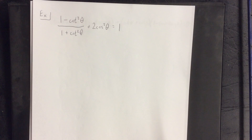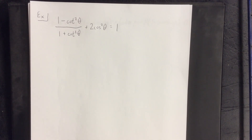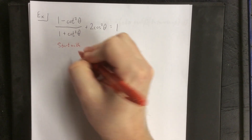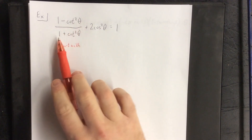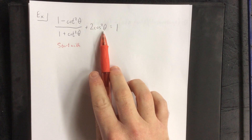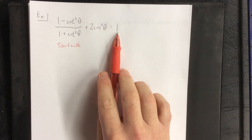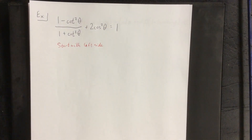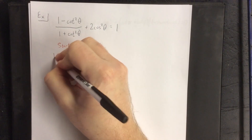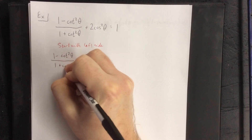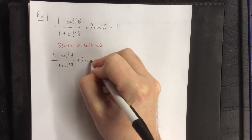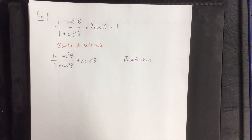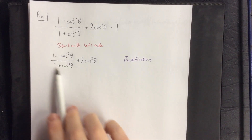Let's try another one — maybe a little bit more challenging. We're going to verify the identity: one minus cotangent squared of theta over one plus cotangent squared of theta, plus two times cosine squared of theta, equals one. We're supposed to start with the more complicated side. The right side is just one, so I'm going to go with the left side. I'll make two columns — one for the steps and one for the justifications.